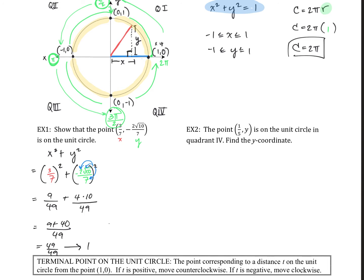So yes, it's on the unit circle. We plugged the two points in and ended up with the answer of 1, which means it's on the unit circle, because the radius is 1.